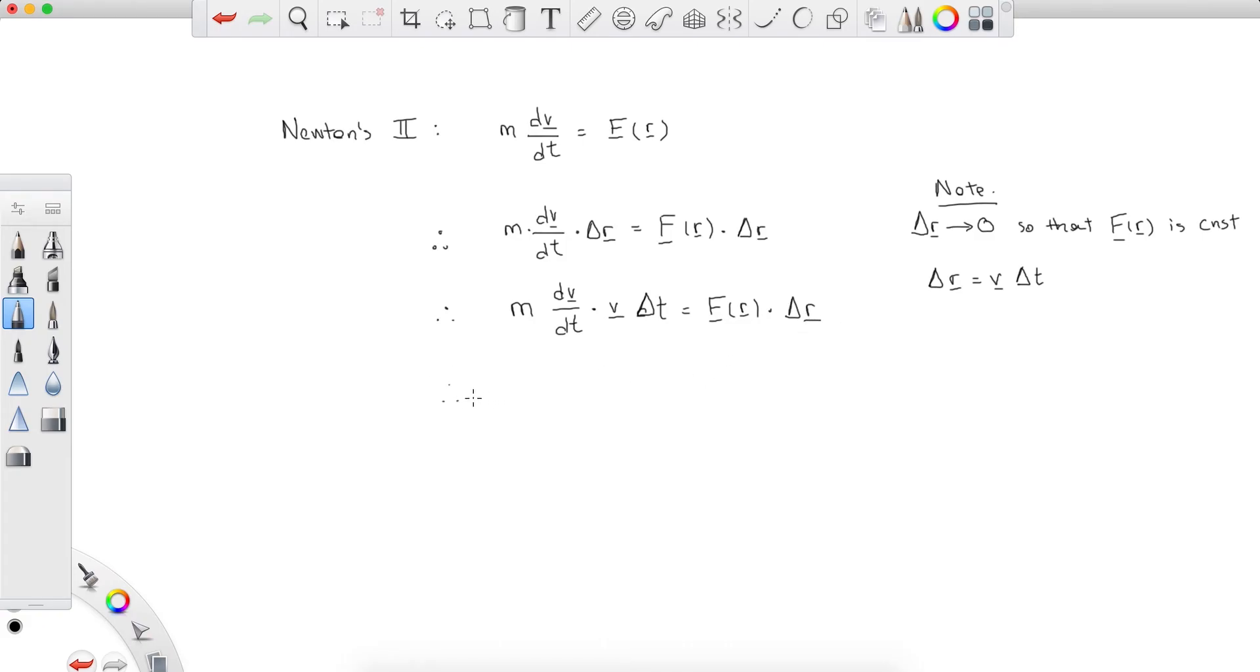Now what do we do? Again, remember that this right here is equal to the time derivative of one-half v times v. Or in other words, this is equal to the time derivative of the magnitude of the velocity vector squared. Now you can check this by using vector calculus.